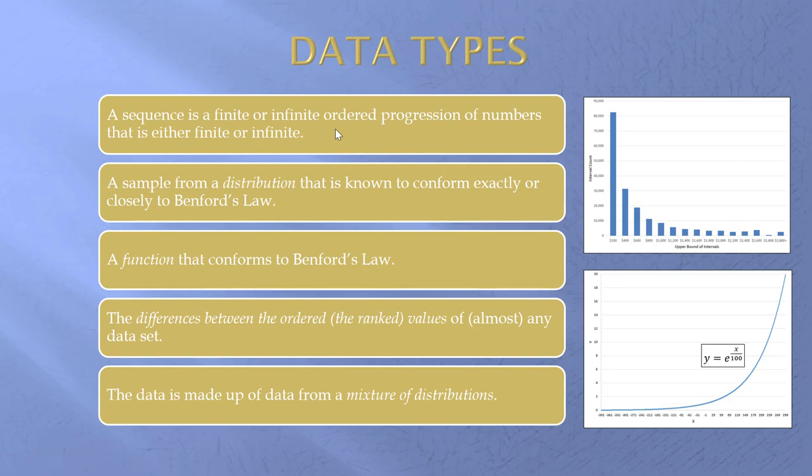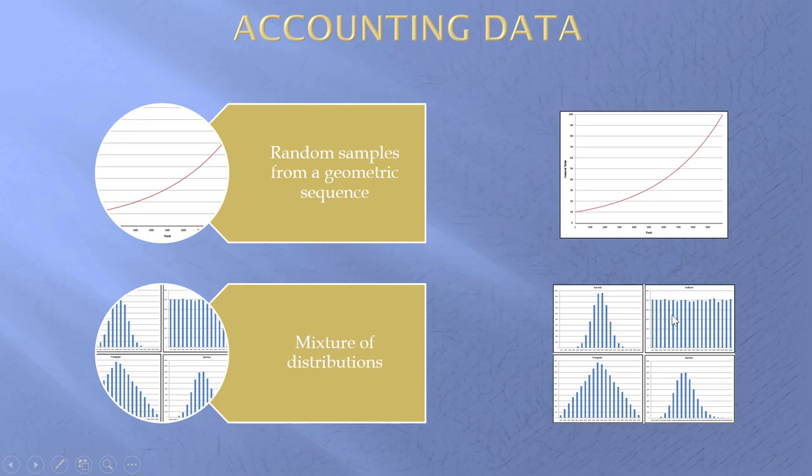And the last one is the data is made up of a mixture of distributions. This is one distribution, and I have different distributions over here. This is known as the uniform distribution and this is the normal bell-shaped distribution. If I took a whole lot of different distributions and mixed the numbers together, the result will be Benford's Law.